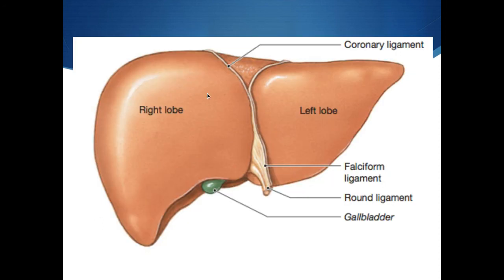Here's a picture of the liver. We have the right lobe and the left lobe, with the falciform ligament in between them. There's also a round ligament that connects with it and helps hold the liver to the ventral abdominal wall. We can see a little bit of the gallbladder sticking out underneath.